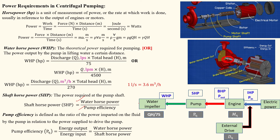Pump efficiency is energy output divided by energy input. The energy output from the impeller is the water horsepower. The pump transfers energy into the water through the impeller — that is the output. The input to the pump is the shaft horsepower. So pump efficiency equals water horsepower divided by shaft horsepower, and therefore shaft horsepower equals water horsepower divided by pump efficiency.